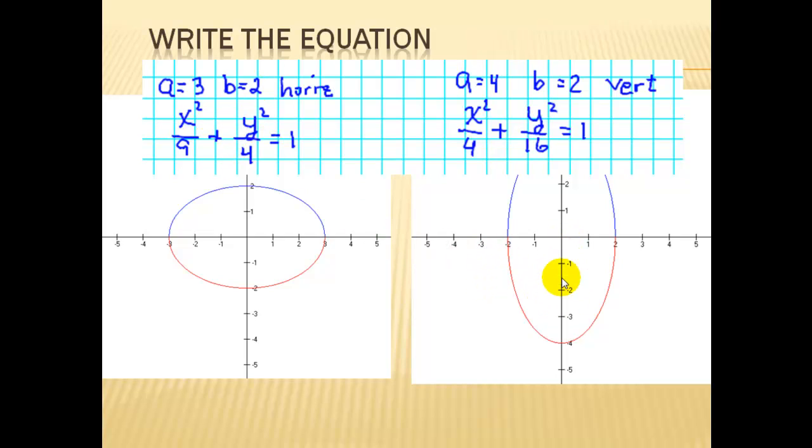On this one, our vertices were up and down. So we have four units for a. That goes under the y, since we're vertical. And b to the co-vertices. So it's really pretty easy to write the equation of an ellipse, especially when it's centered at the origin.